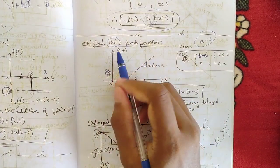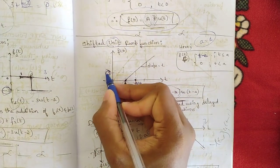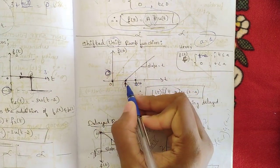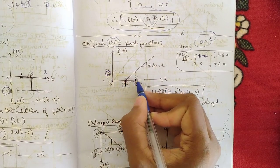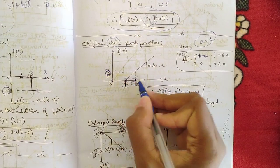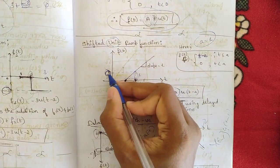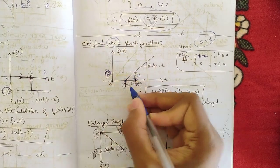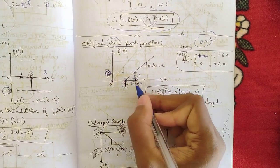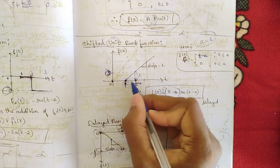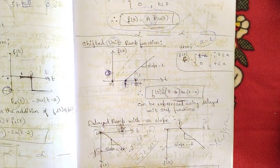Since it is a unit ramp, the slope equals 1. The amplitude at t = 1 is 1, and from point one onwards the ramp rises, so at t = a + 1 = 2 the value is 2. This is the shifted unit ramp function — instead of starting from zero, the ramp starts from point one, hence represented as t minus a.